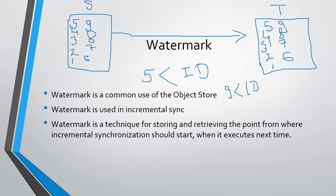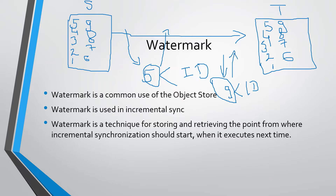Then in the third run it will pick all records whose ID is greater than nine, so it will pick ten, eleven, and so on. These numbers are the watermark point, and storing and then later retrieving this number — like five and nine — in the next iteration is called the watermark technique.